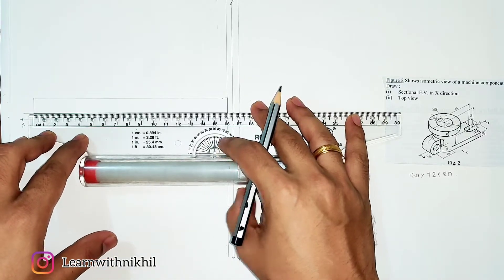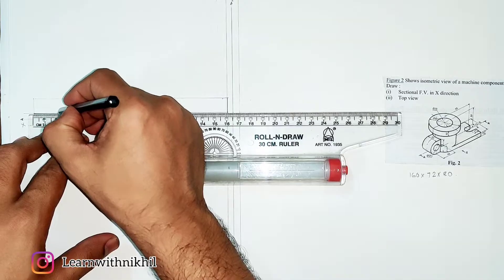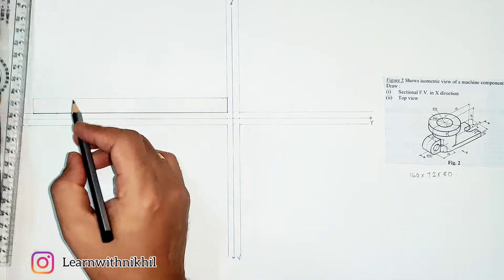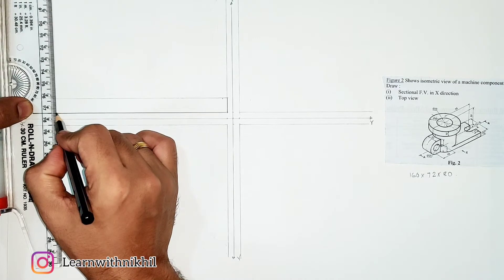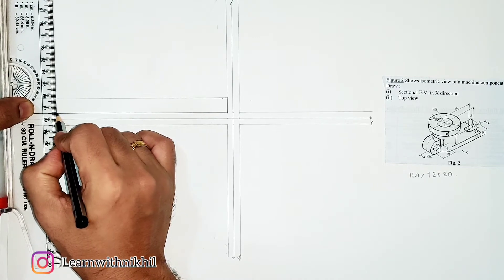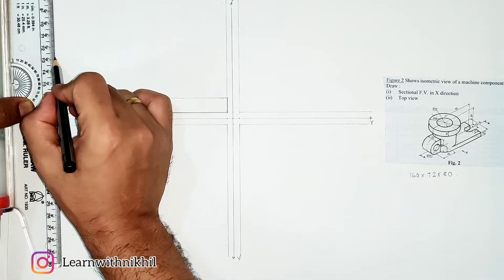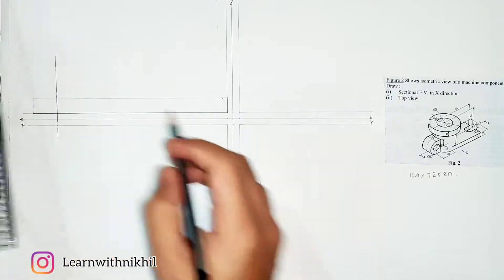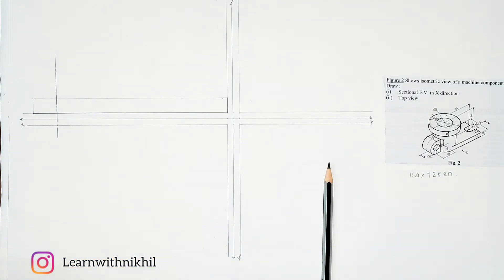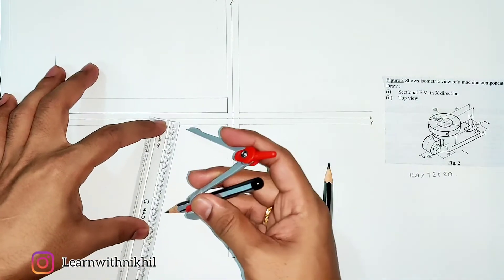So from here, 20 millimeters from the left we will mark a point, then from here I will draw a perpendicular to this line. Drawing a perpendicular line from here, I am drawing the center line of the circle — that is big gap, small line, gap, big line.